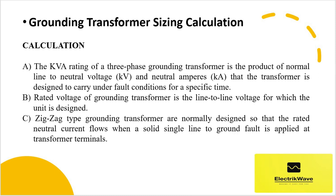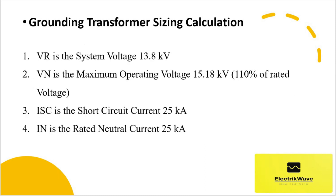Here, Vr is the system voltage: 13.8 kV; Vn is the maximum operating voltage: 15.18 kV (110% of rated voltage); Isc is the short circuit current: 25 kilo-amperes; and In is the rated neutral current: 25 kilo-amperes.